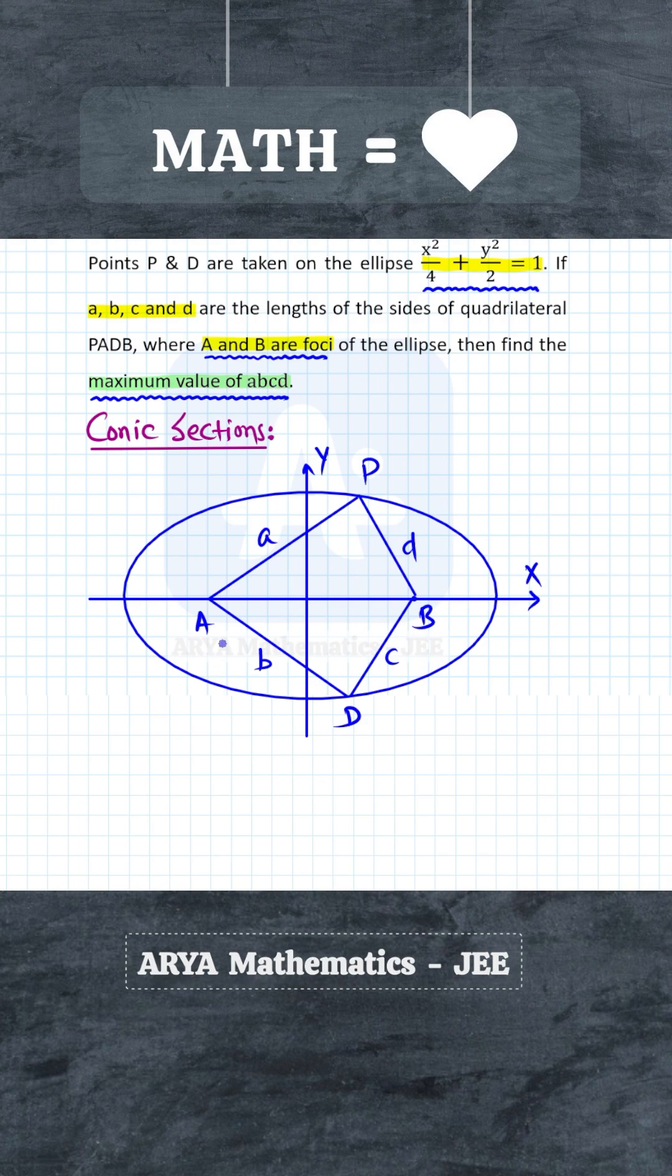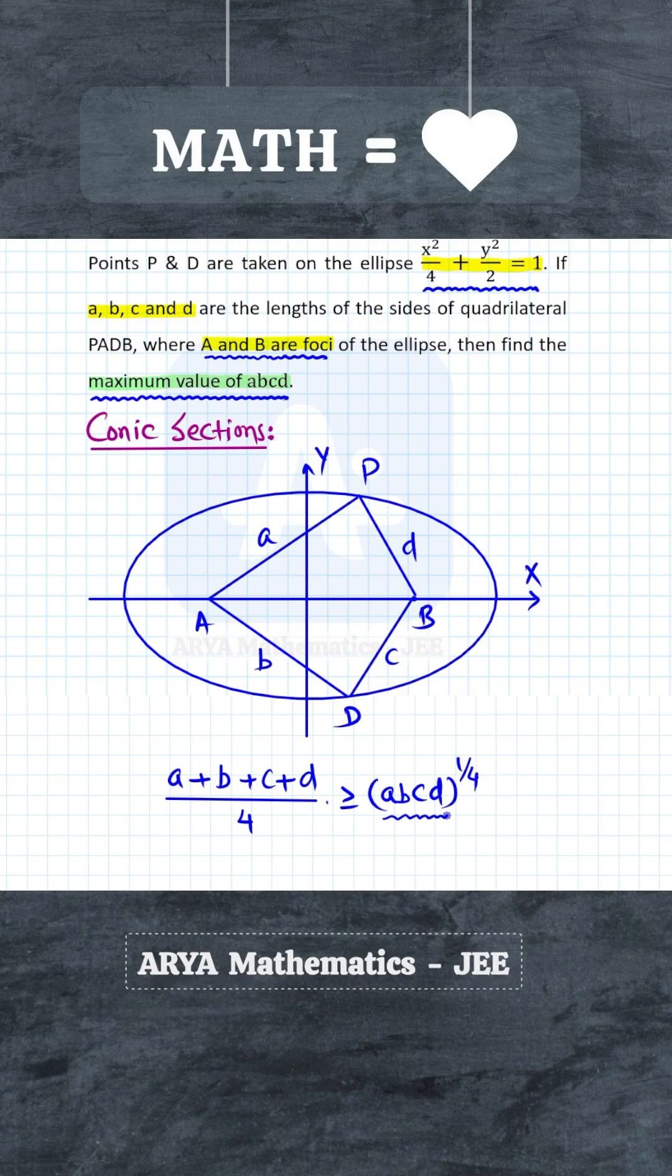Then using AM-GM inequality, we will find the maximum value of abcd, because once we have the sum of four sides, then we can write (a + b + c + d)/4—that is, the arithmetic mean of these four numbers—this must be greater than or equal to (abcd)^(1/4), that is, the geometric mean of these four numbers.